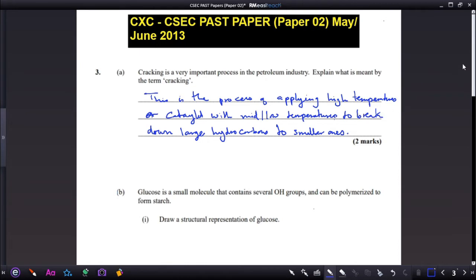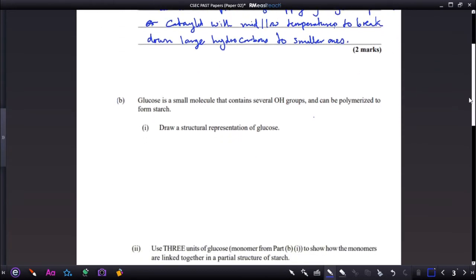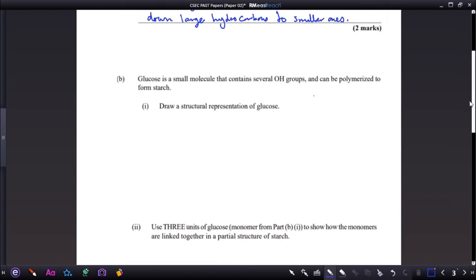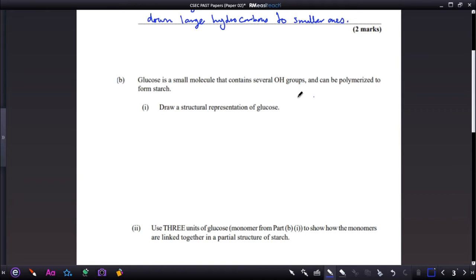Part B: glucose is a small molecule that contains several hydroxy groups and can be polymerized to form starch. Draw a structural representation of glucose. There are several structural representations of glucose - the Fisher projection, the Haworth projection - but those are not required at your level. What your examiner wants you to draw is this structure to represent glucose. The rectangular box right here represents the rest of the molecule.